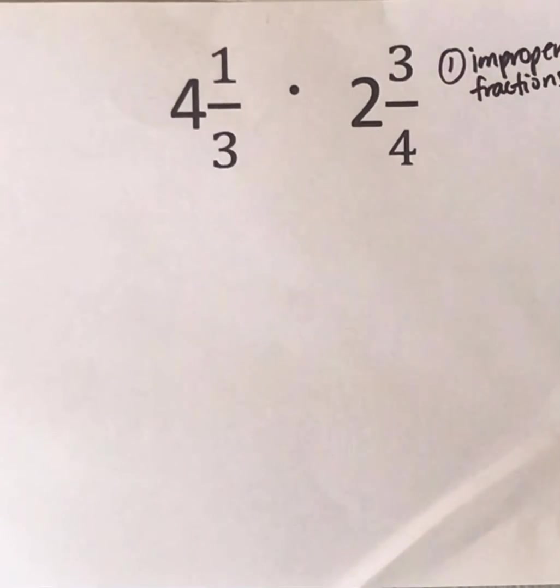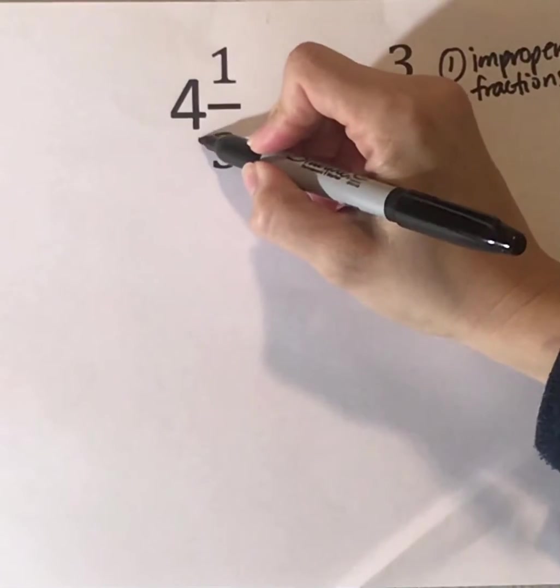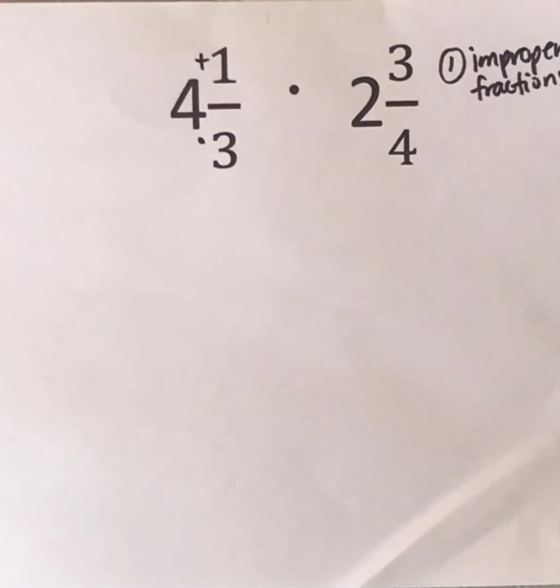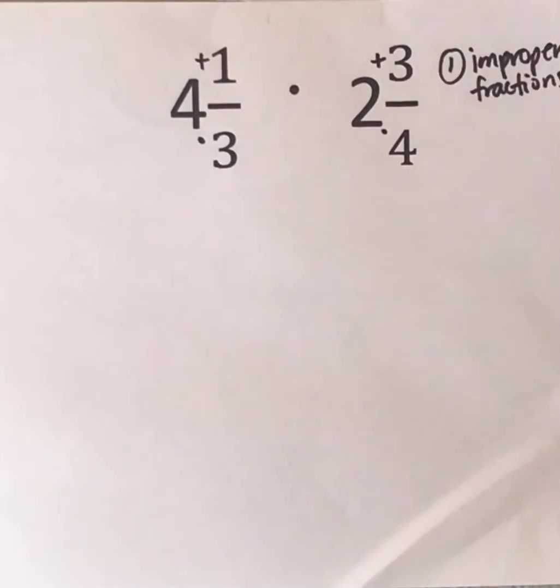So to do that, you're going to follow this method. So you're going to do 3 times 4, and then you're going to add 1. Same here, you're going to do 4 times 2, and then add 3.